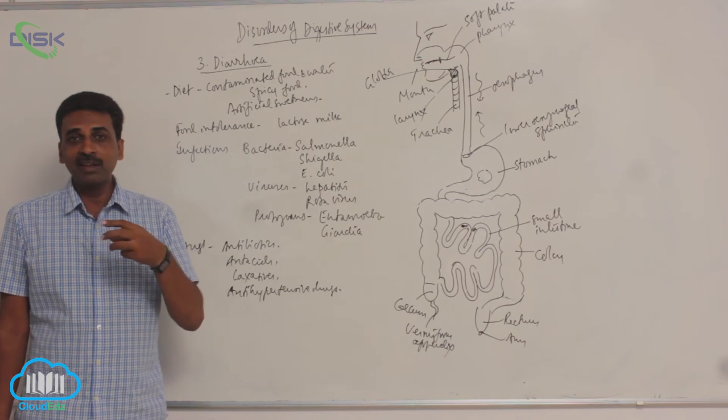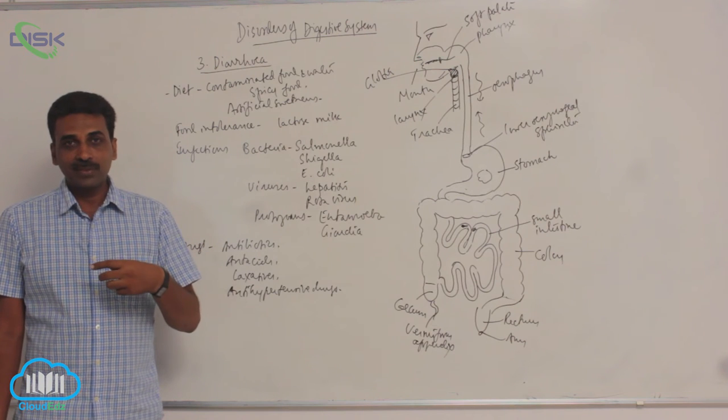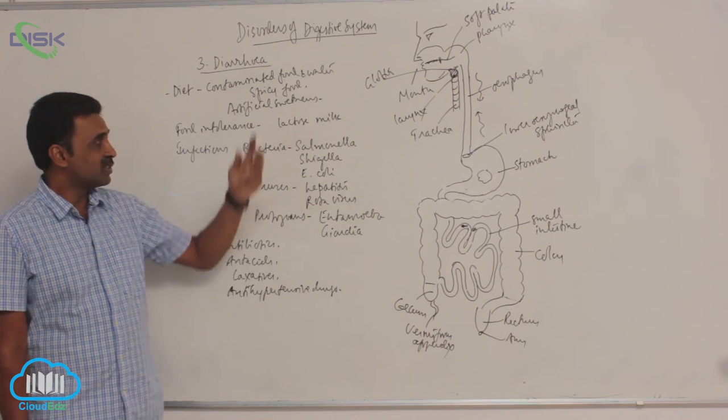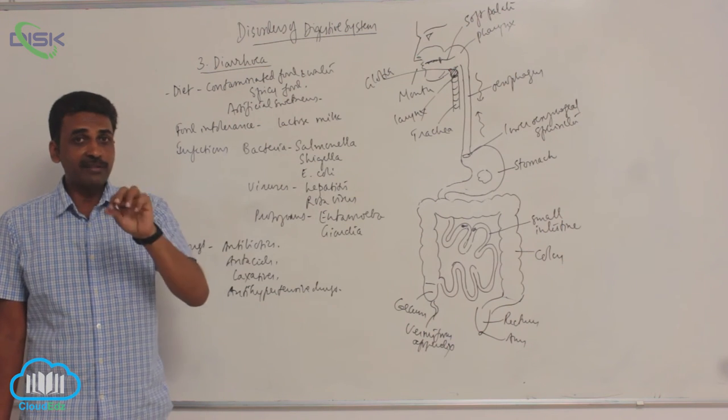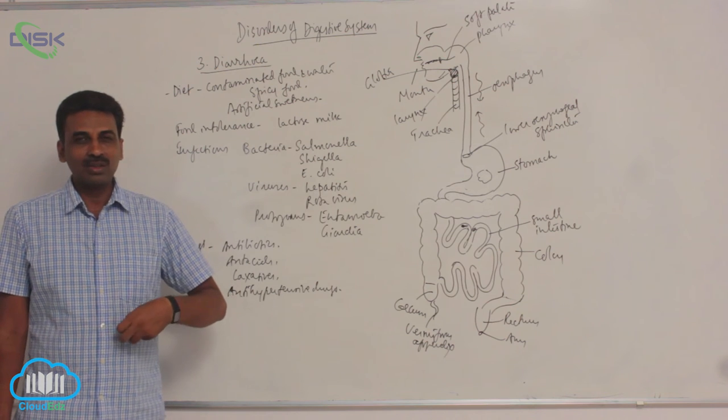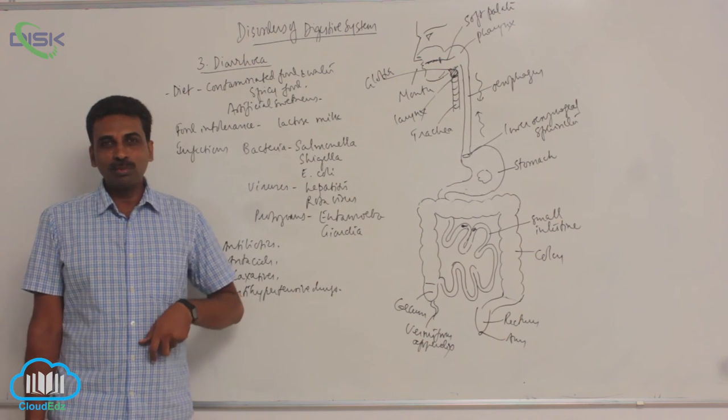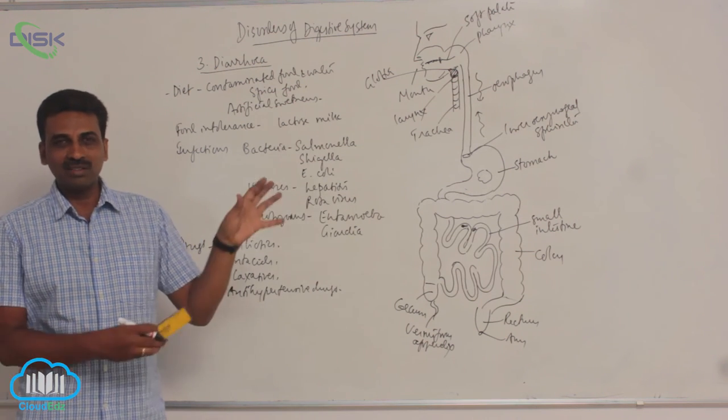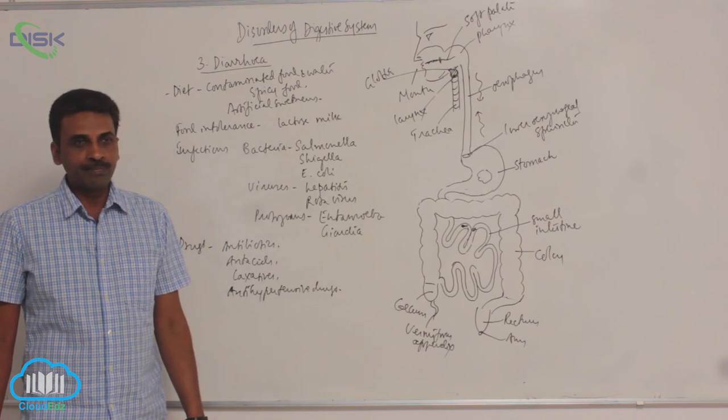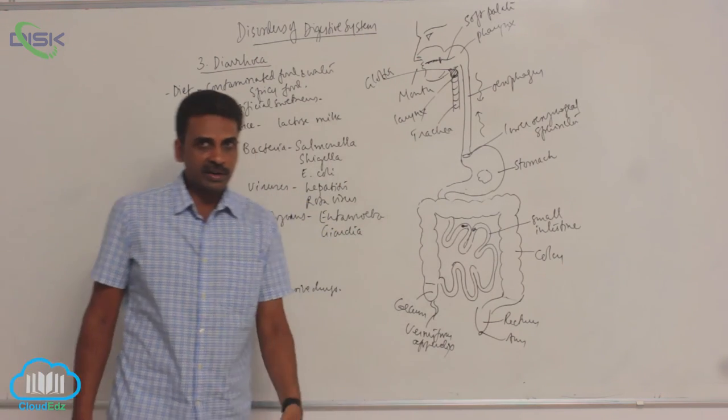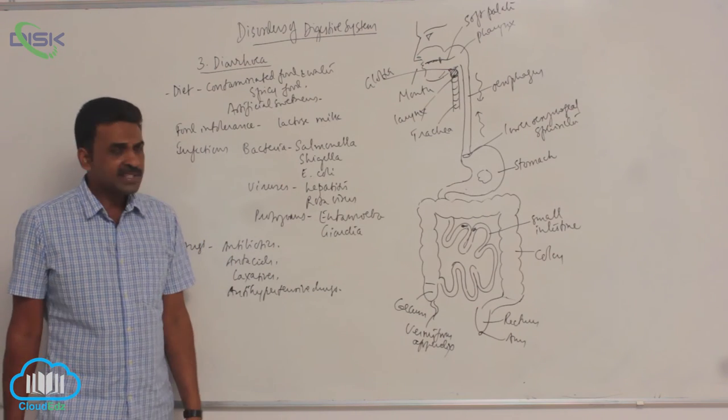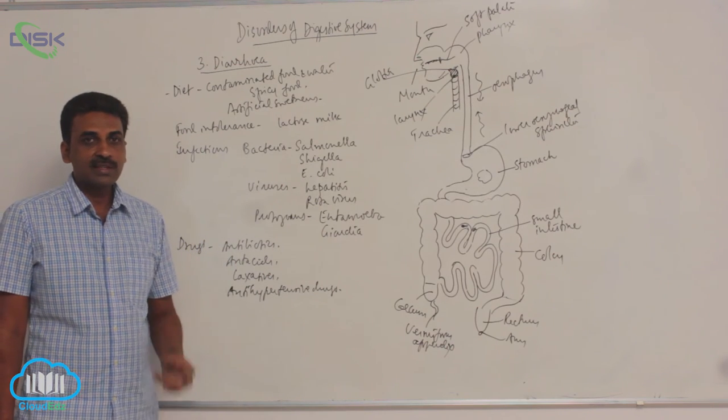Artificial sweeteners: sometimes we have gone outside, we have taken some liquids, some cooling liquids outside. Under that condition they are added with some artificial sweeteners. So that artificial sweeteners, they are stimulating the gut so much so that there is more of contraction, more water is pushed outside, there is diarrhea.